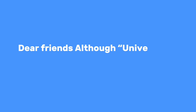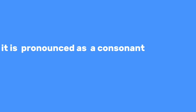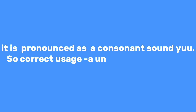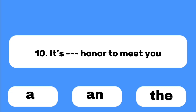Number nine: Do you have ___ uniform? Although 'university' and 'uniform' start with the vowel letter U, they are pronounced with a consonant sound 'yu.' So the correct usage is 'a university' and 'a uniform.'